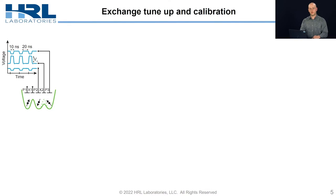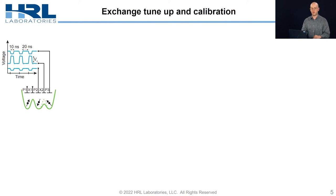So exchange — how do we tune it up? As I alluded to earlier, we apply voltage pulses to our X gates to raise and lower the barriers to turn exchange on and off. But we can't just do that — we have to apply compensating pulses to the neighboring P gates in order to stay in the correct charge cell.